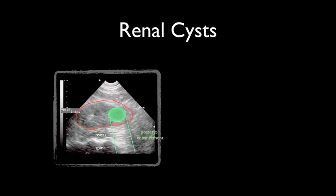Renal cysts can sometimes be mistaken for hydronephrosis. Cysts are typically single and arise in the periphery of the kidney, but can be multiple, as in polycystic kidney disease.